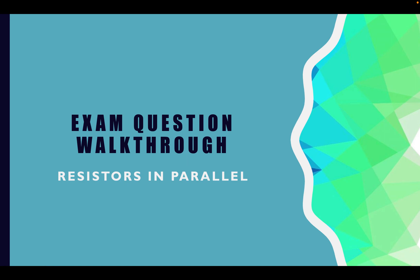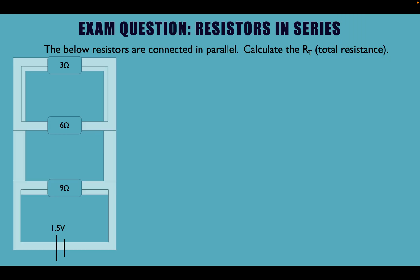Right, okay, so we're going to do an exam question walkthrough — resistors in parallel again — but we're going to do it using a method without a calculator, so we can use the lowest common denominator. If you watched the first one, you'll see how we did it there, and now we can see how to do it using the lowest common denominator. It's exactly the same question again.